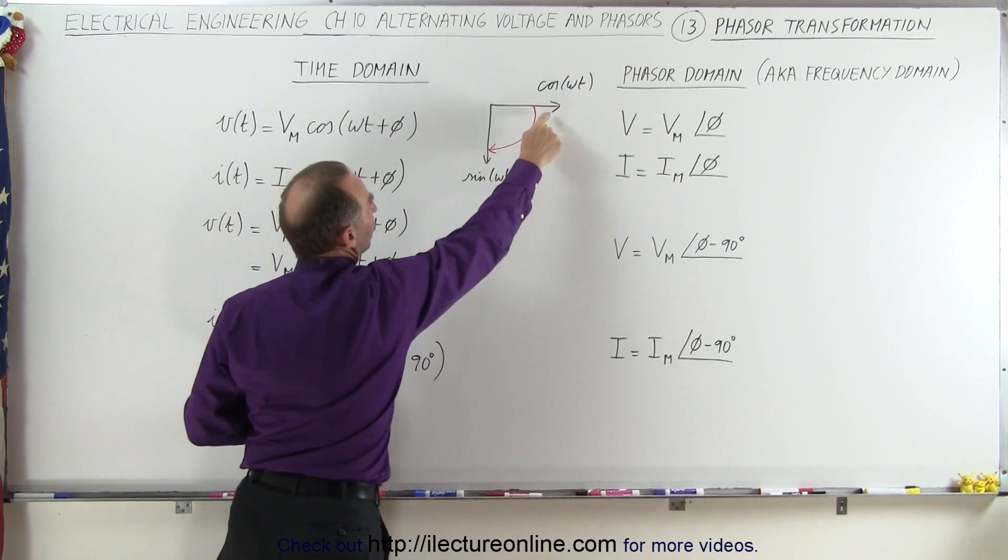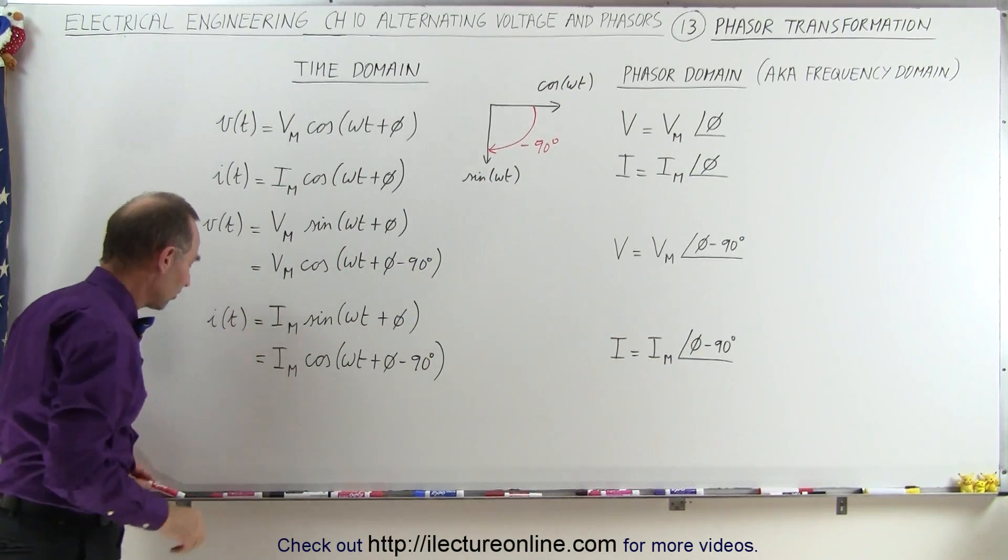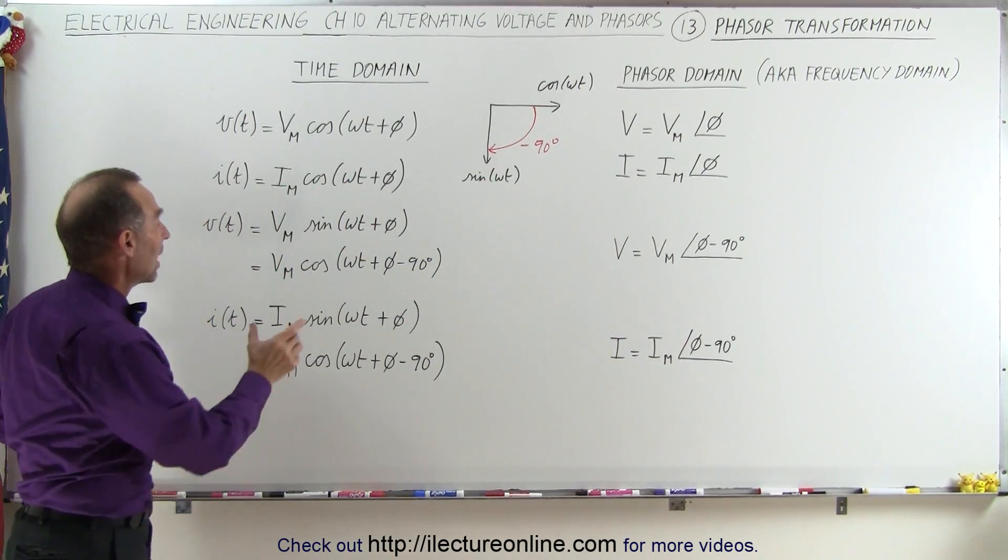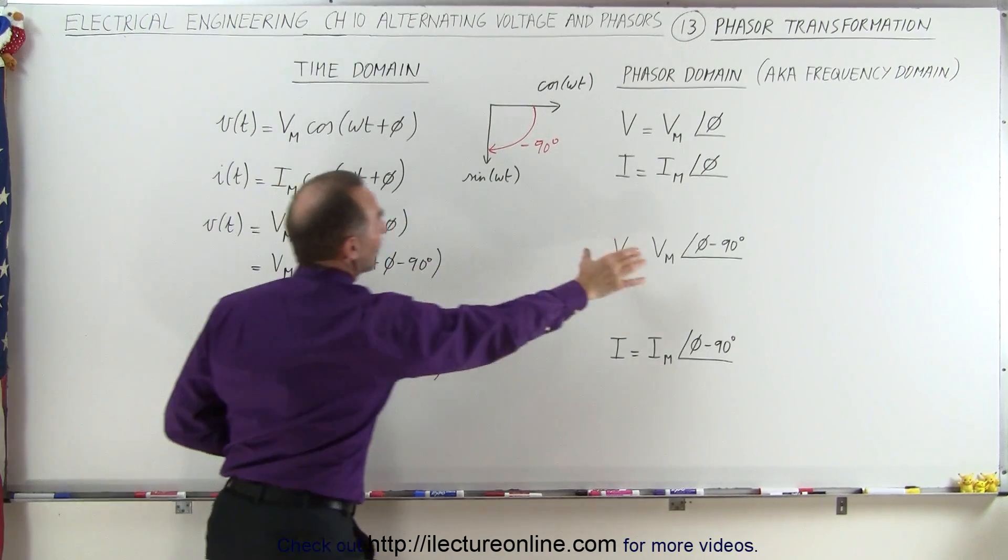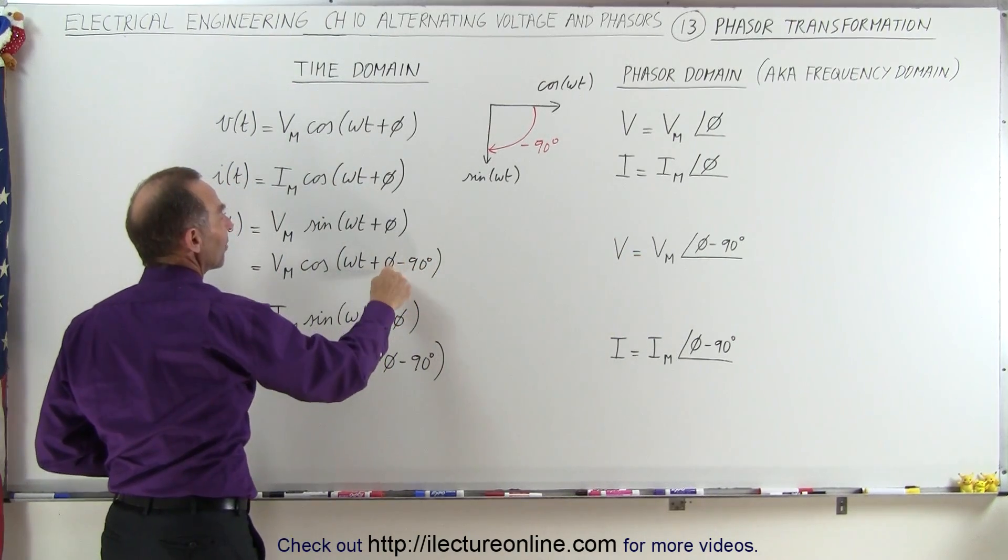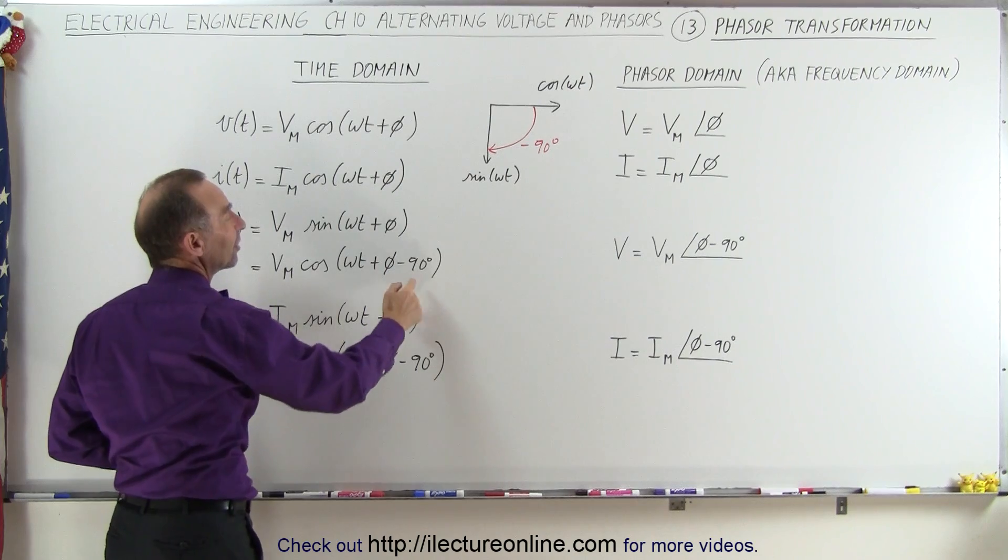And that means that if we now express this in the phasor domain, instead of simply writing the phase angle as phi, we write as phi minus 90 degrees.